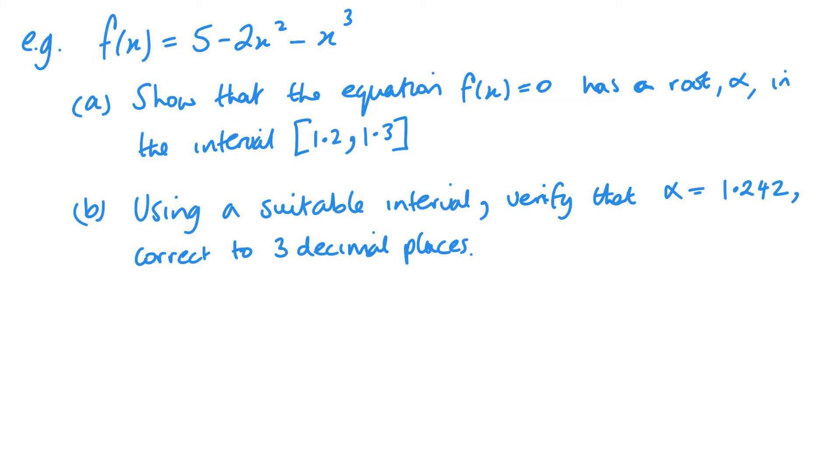We've got a function here, f of x equals 5 minus 2x squared minus x cubed. Show that the equation f of x equals 0 has a root alpha in the interval 1.2, 1.3. So that means 1.2 to 1.3. And all we need to do to that is substitute both of those values into my function.